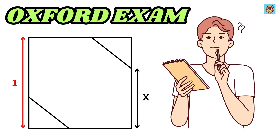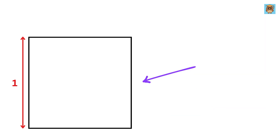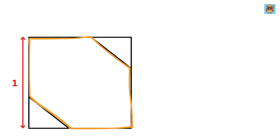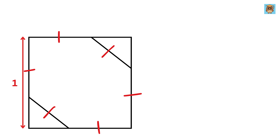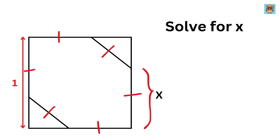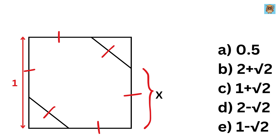This is a nice entrance exam question asked by Oxford University. We have a square of side length one unit, and we have an irregular hexagon whose all sides are of equal length, and it is placed inside this square. Let us label the side of the hexagon as X. Our job is to find the value of X and select the correct option.